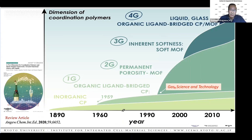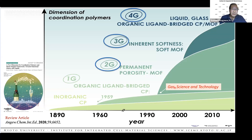We can synthesize porous structures using metal ions and organic molecules. Today we are going to talk about 2G, 3G, and 4G — G meaning generation. I have just introduced the 1G compounds, so let's start with the 2G compounds.